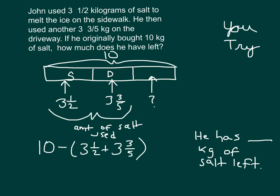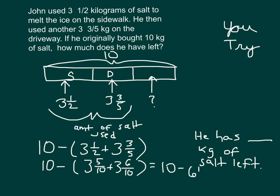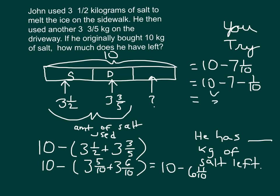Did you add these correctly? Did you have three and five-tenths plus three and six-tenths to get like units? Combining those, did you get ten minus six and eleven-tenths? Continuing that, we would have ten minus seven and one-tenth. Breaking that apart: ten minus seven minus one-tenth. Ten minus seven is three, minus one-tenth — in other words, one-tenth less than three — which is two and nine-tenths. So there, the work is complete.